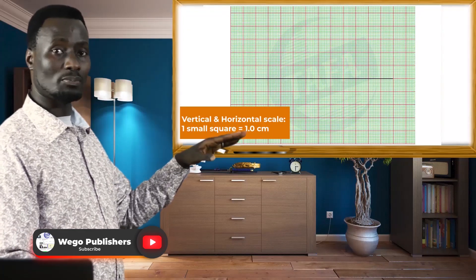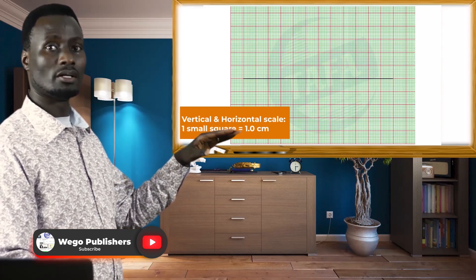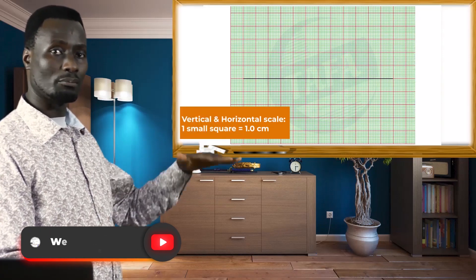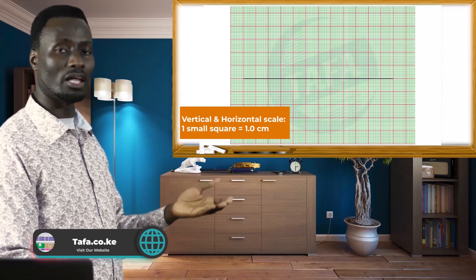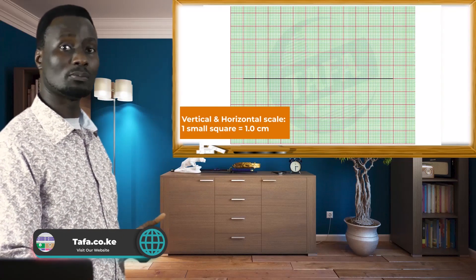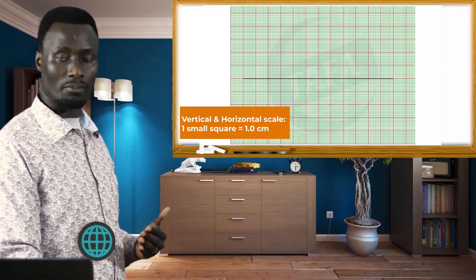Drawing the principal axis should be in such a place where you leave some room for the image which will form on the lower side of the principal axis, since we are expecting an inverted image.